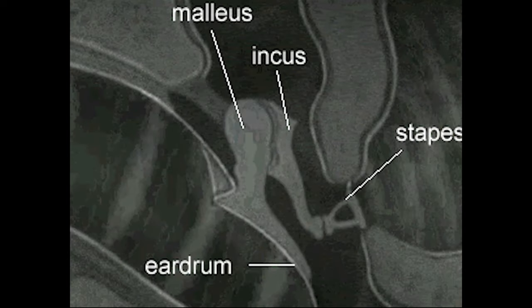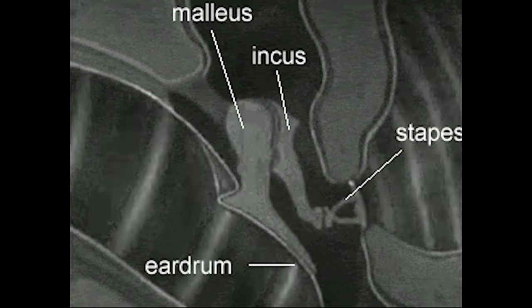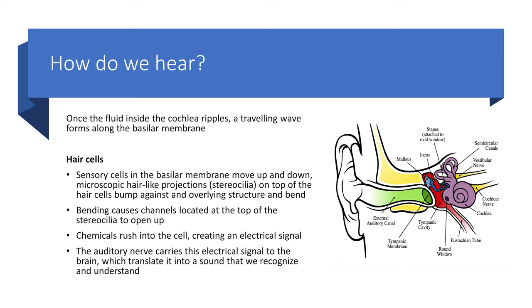Fluid travels through the cochlea and vibrates the basilar membrane, which is the elastic partition from the beginning to the end of the cochlea, splitting it into upper and lower parts. It's lined with cilia — hair cells — that bend, and has stereocilia at the tips which can open for chemical reactions to process sound. This bending causes channels to open; chemicals rush in, depolarizing the cell and generating an electrical signal. The auditory nerve then carries this signal to the brain, where it's translated into a sound we recognize and understand.